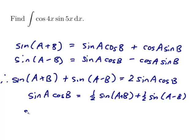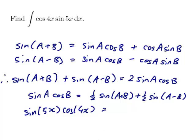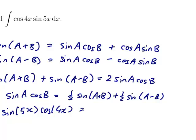So therefore sin 5x cos 4x will be a half of sin(A+B). So 5x plus 4x would be 9x, plus a half of sin(A-B). So 5x minus 4x would just be x.